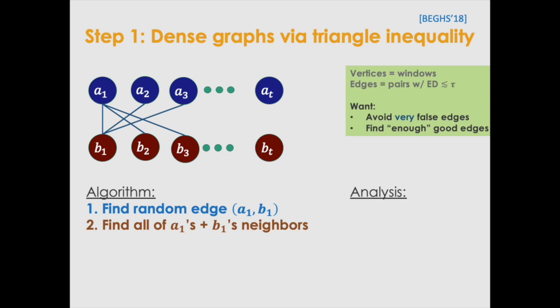And the idea is, by the triangle inequality, if we have this, if we complete this clique, any pair that's connected by the three-step path we formed before has edit distance at most three times tau.